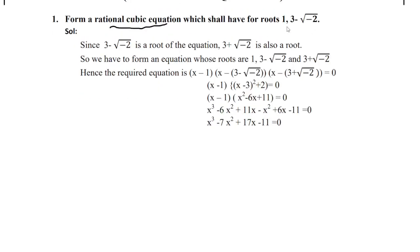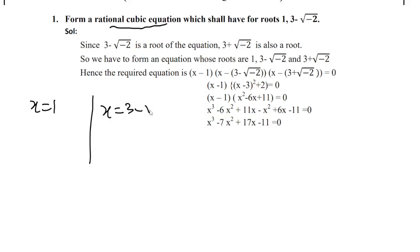There are two roots: one is equal to 1, and the other is 3 minus root of minus 2. We can use the factor method. Using the factor method, x equals 1, so x minus 1 equals 0.